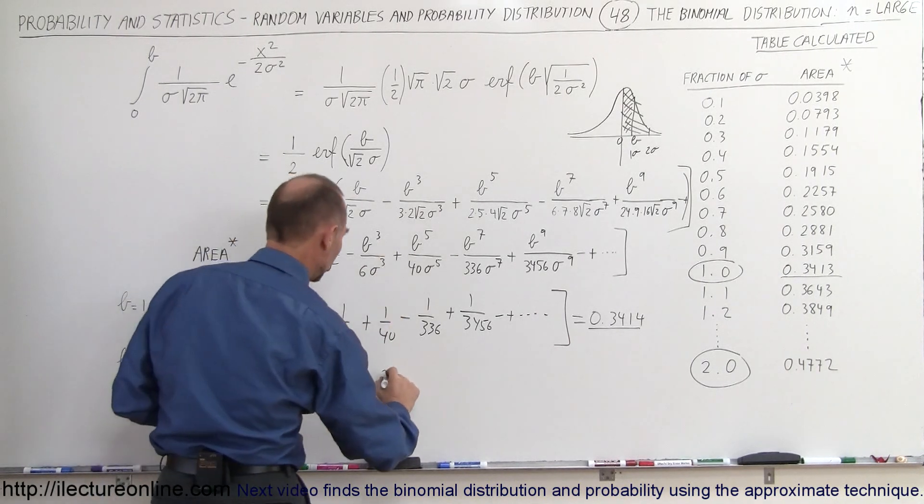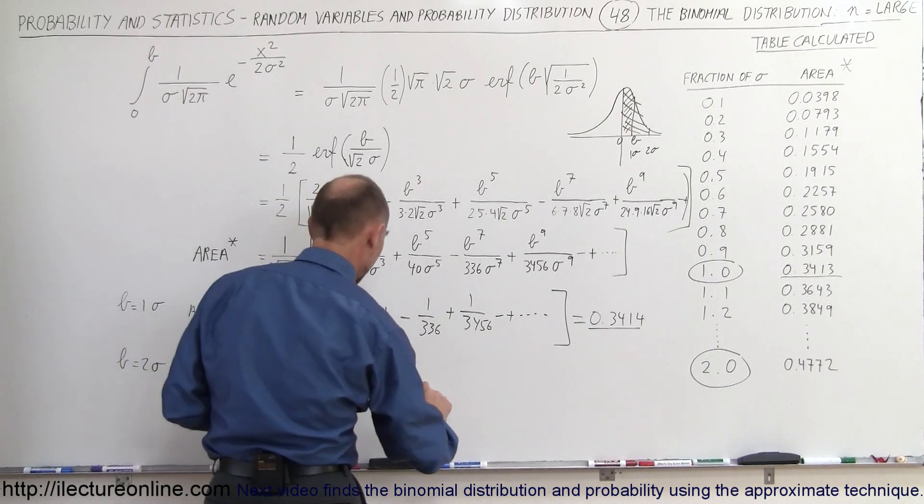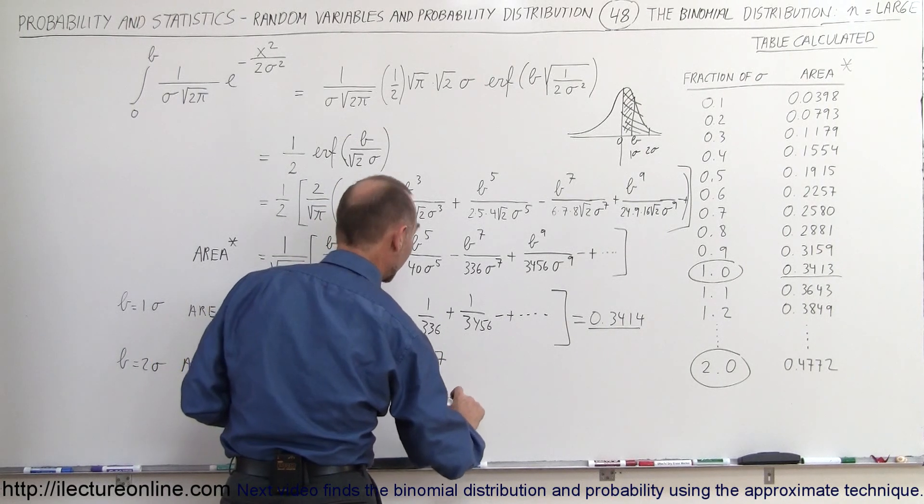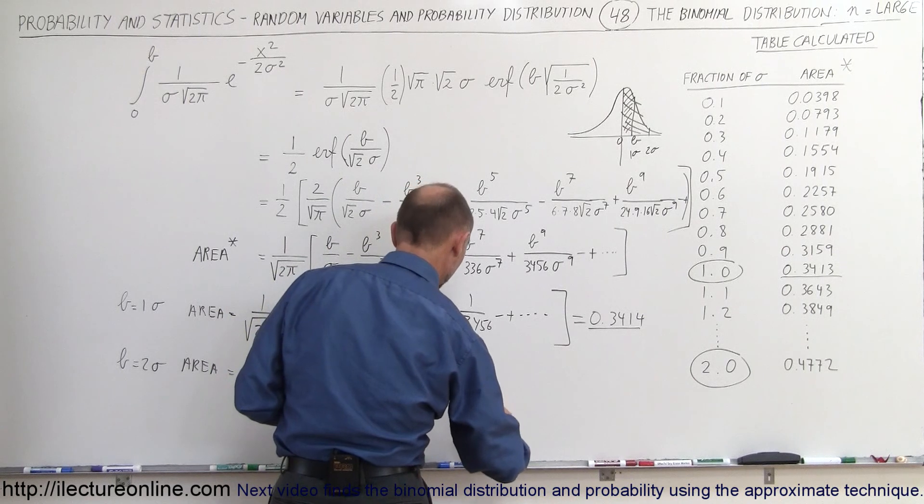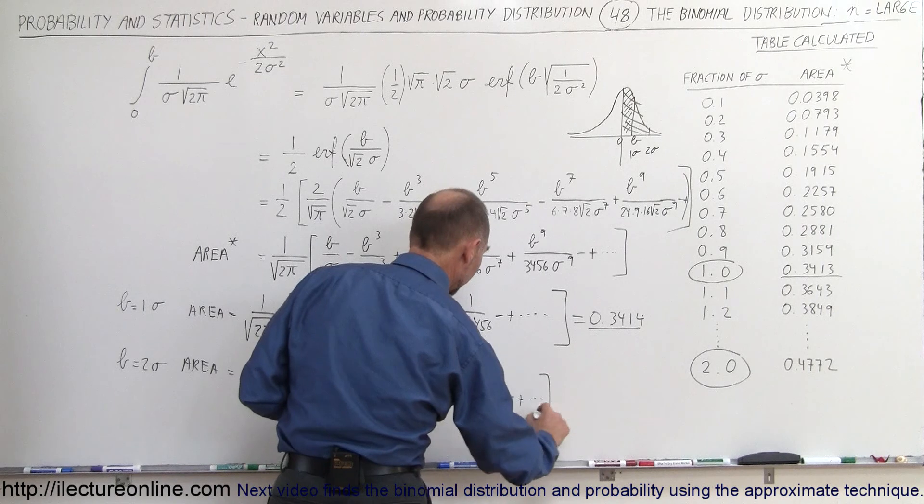Plus, that would be two to the fifth power, divided by 40, minus two to the seventh power, divided by 336, that would be plus two to the ninth power, divided by 3456, and that would be minus, plus, and so forth.